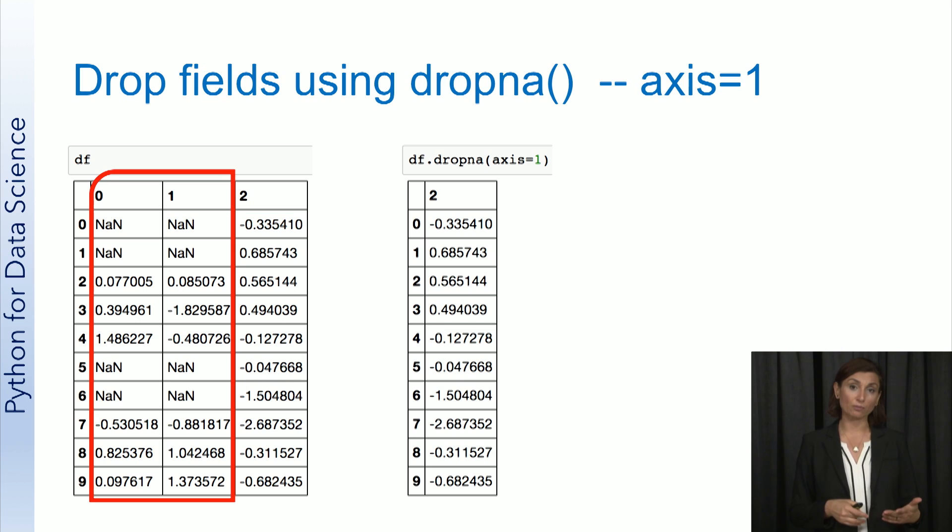With the axis 1 option, any columns with missing values will be eliminated. In this case, since both columns 0 and 1 have NaN values in them, we are left with only column 2 in the resulting data frame.